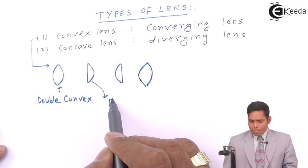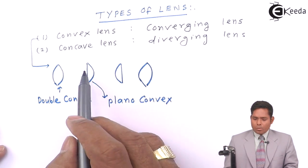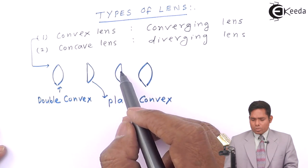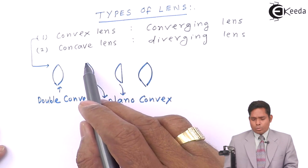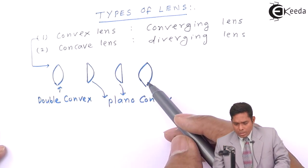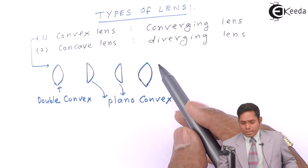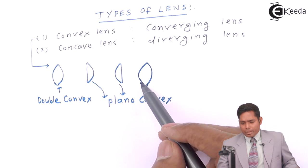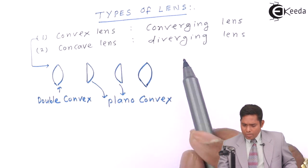This type is called plano-convex — one side is plane and the other side is curved. Both orientations mean the same thing, whether you place this surface towards left or this surface towards right. Generally, when we say convex lens, we mean double convex. This is also double convex.